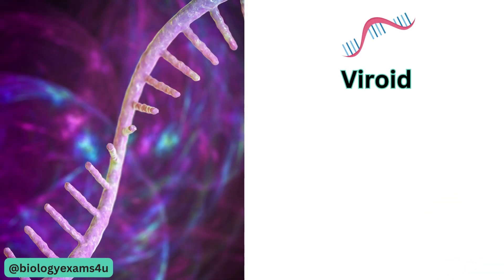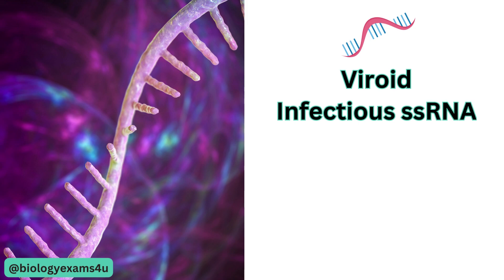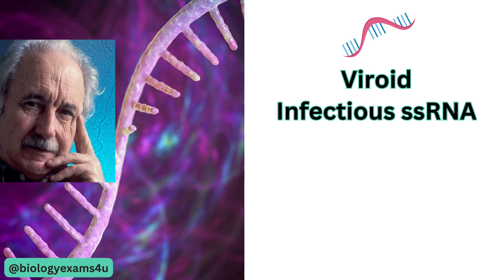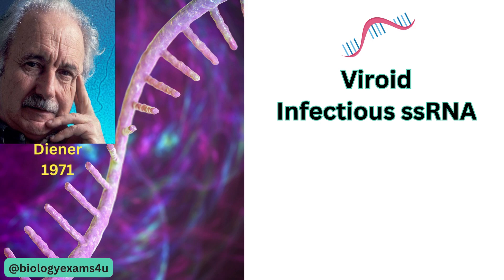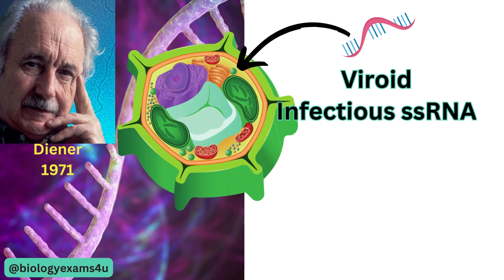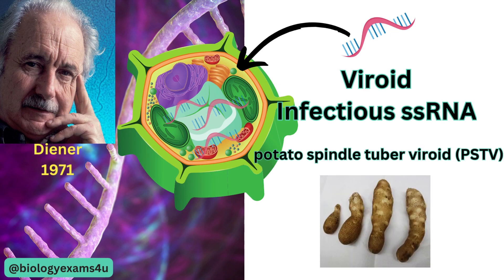Viroids are infectious pathogenic RNA particles discovered in 1971 by T.H. Diener. They are made up of only a short strand of circular RNA and are the smallest known infectious agents. Viroids reproduce by infecting host cells and hijacking the host cell's machinery to replicate their RNA. They can cause a variety of diseases in plants, such as potato spindle tuber viroid and citrus exocortis viroid.